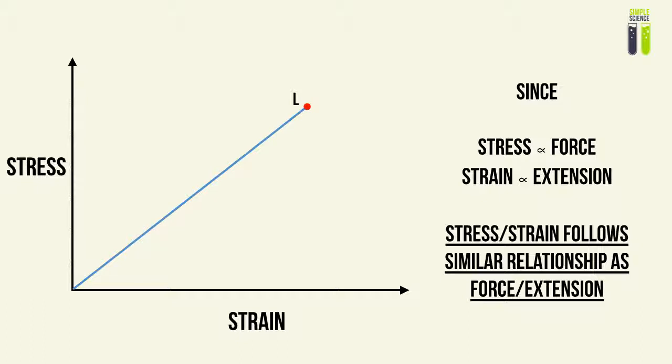Therefore, stress and strain must be directly proportional to each other. They will have a constant that will link their relationship together. And since stress and strain will follow a similar relationship as force and extension, it's directly proportional. It will be a graph, a linear graph, that passes through the origin, just like a force and extension graph, where the behavior will be different as it reaches the elastic limit, of course.